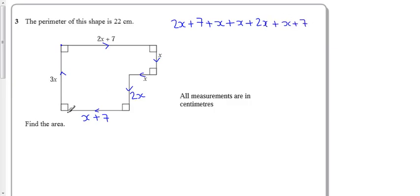Plus x plus 7, and then finally up the final step back to the beginning here, plus 3x. The total of all of that must be 22.